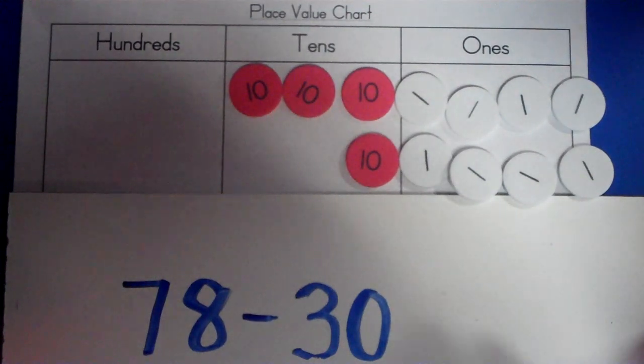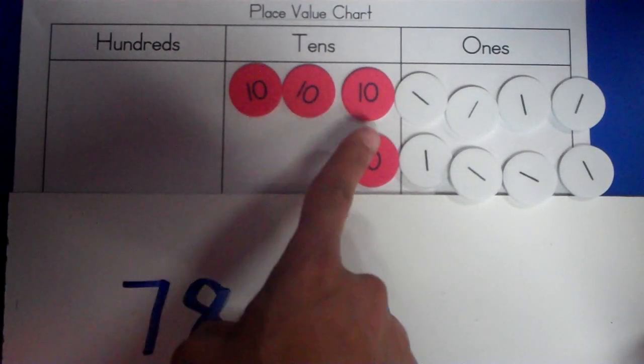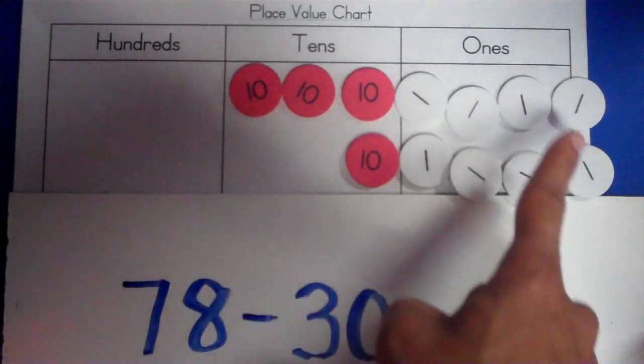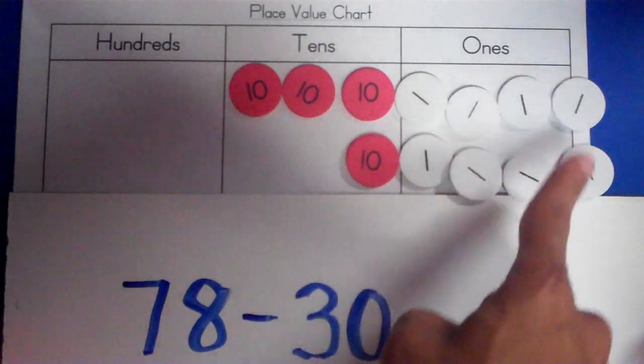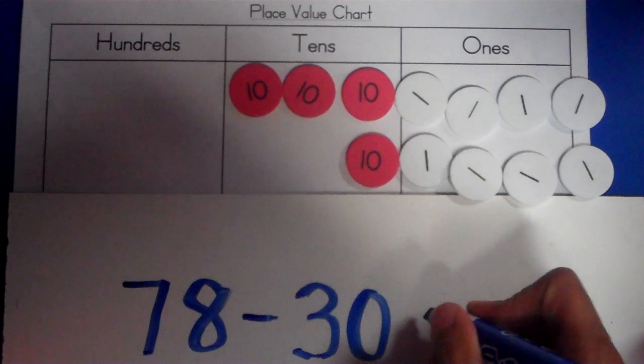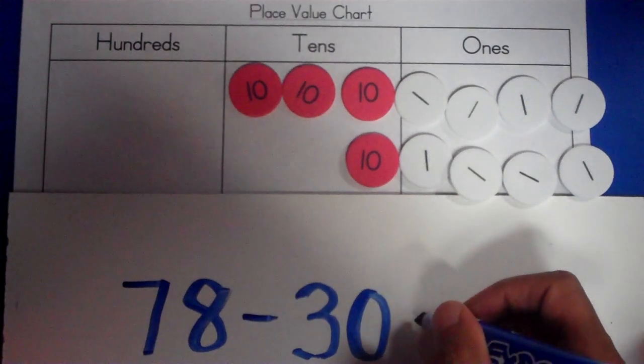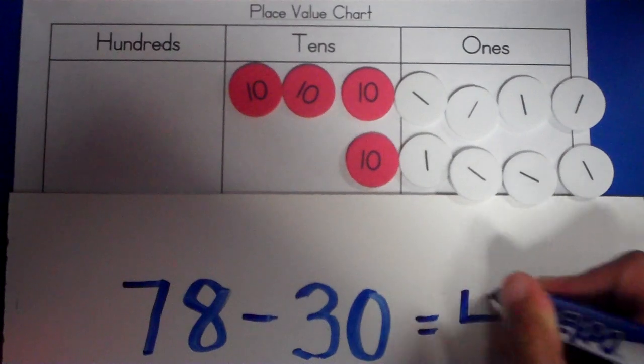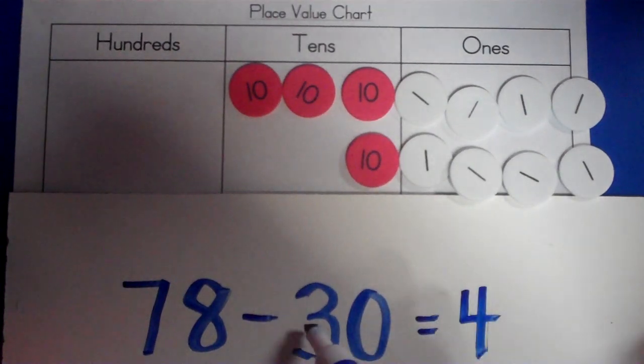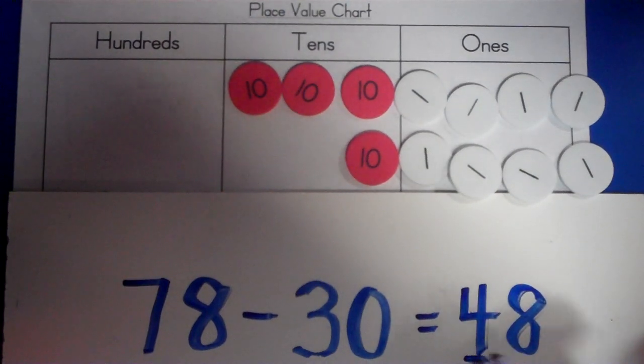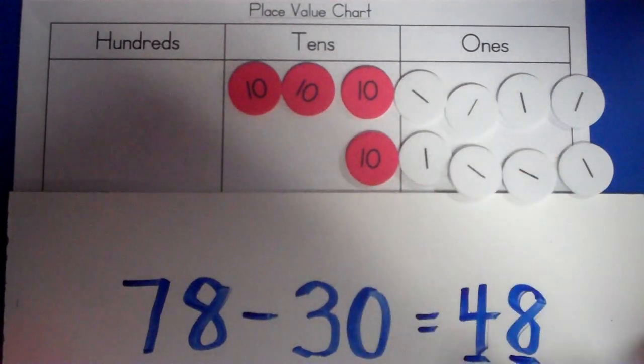So, I am left with a number of four tens and one, two, three, four, five, six, seven, eight, eight ones. So, I am left with four tens and eight ones. So, 78 minus 30 equals 48 because four is in the tens place and that's what I have and eight is in the ones place.